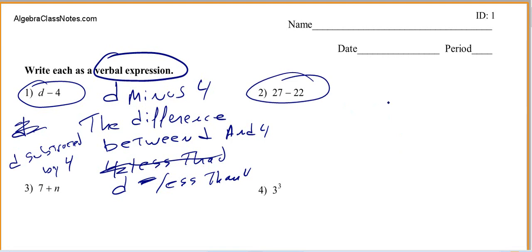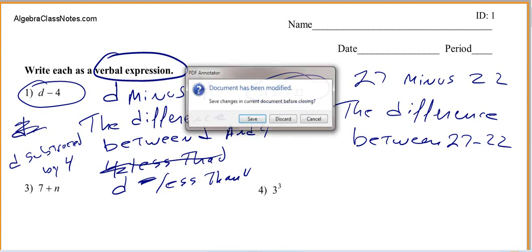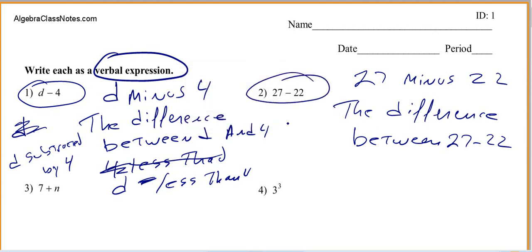What I tell the kids in my class is, hey look, you see stuff like this, 27 minus 22. Just write out what you're thinking. Just put words there. Or once again, we could say the difference between 27 and 22. So, let's look at some more examples.